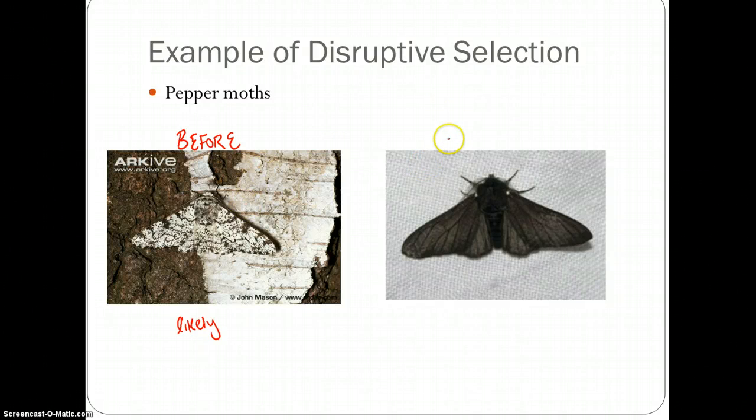After pollution began to increase, the pepper moth wings began to turn dark color, almost completely black. Also, the tree colors were turning dark because they were absorbing the pollution. So the trees were turning dark and the pepper moths were turning dark. Again, they were likely to survive because they were camouflaged. So likely survival.